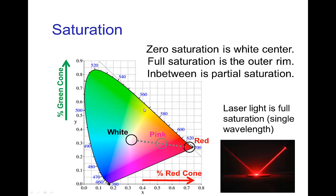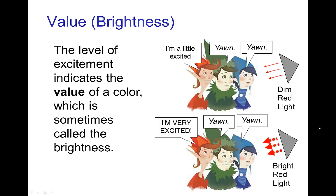On the CIE diagram, the outer rim is full saturation and the center point is zero saturation. Another characteristic of a color is the value or brightness. Something which is bright is said to have a high value and something which is dim would have a low value.